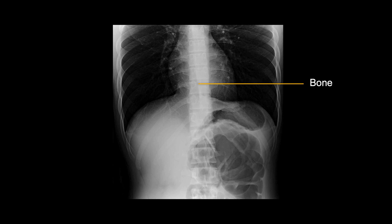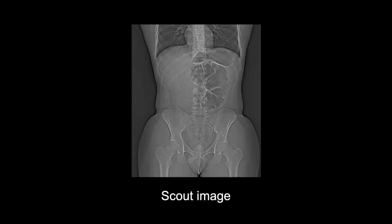Dense structures like bone block x-rays and look bright or white on the images. Air-filled structures like the lungs or bowel look darker because they do not block many x-rays at all. A CT scan starts by taking an image similar to an x-ray called the scout or localizer image, and it is used to plan the CT exam.